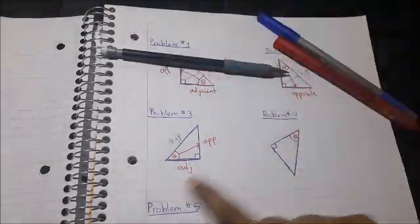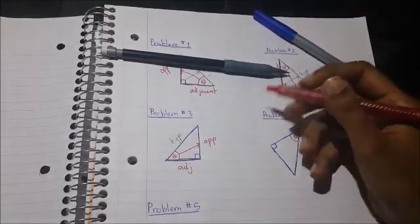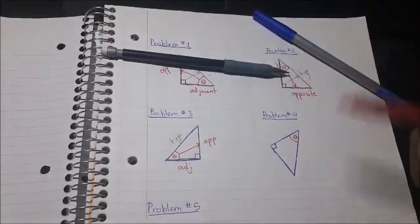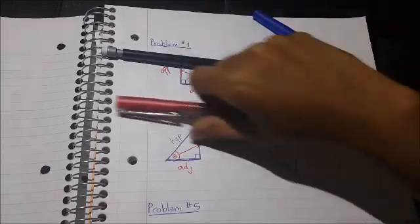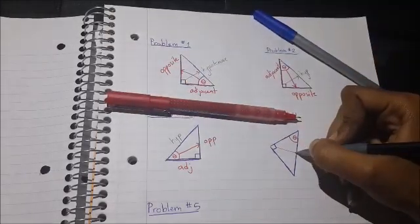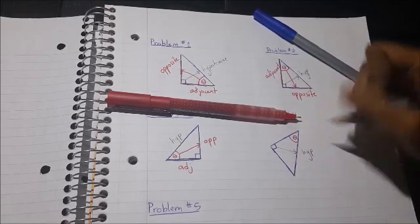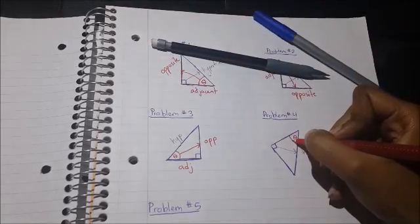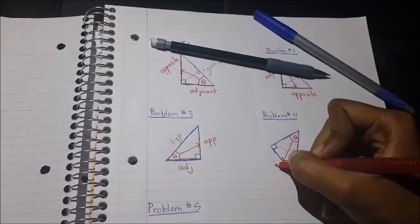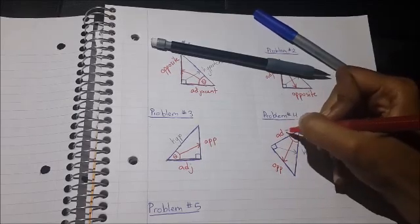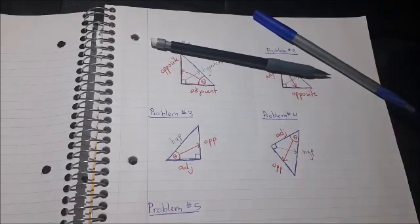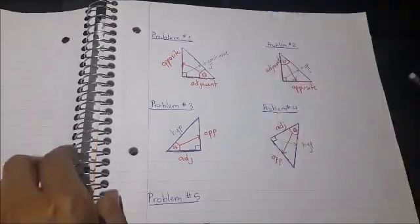So yeah, moving forward, now we're on problem four. And again, we're still identifying which side is adjacent, hypotenuse, and opposite. So again, anything opposite of the right angle is the hypotenuse. This side is our opposite. And our leftover side is our adjacent. And then last but not least, we have our final problem.